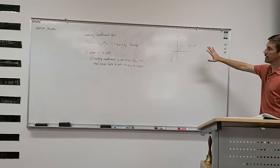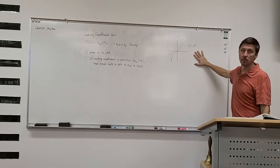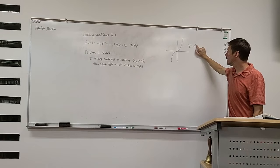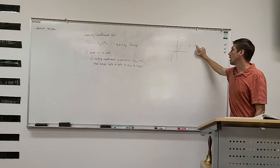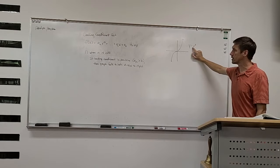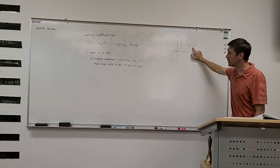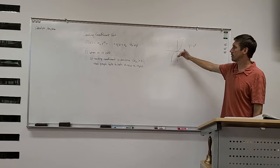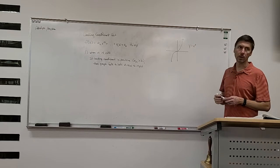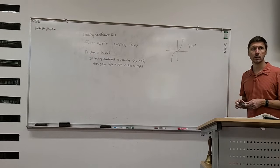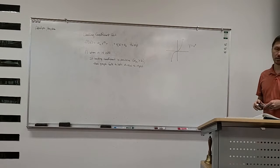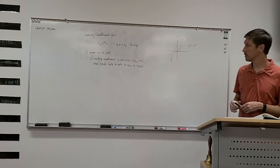That's exactly what we have with y equals x cubed — n is odd (it's three), and the leading coefficient is a positive one. Since it's greater than zero, this thing falls to the left and rises to the right. And it's the opposite if the leading coefficient is negative: it rises to the left and falls to the right.